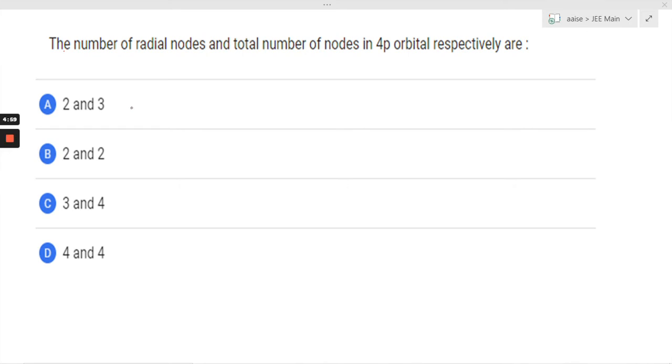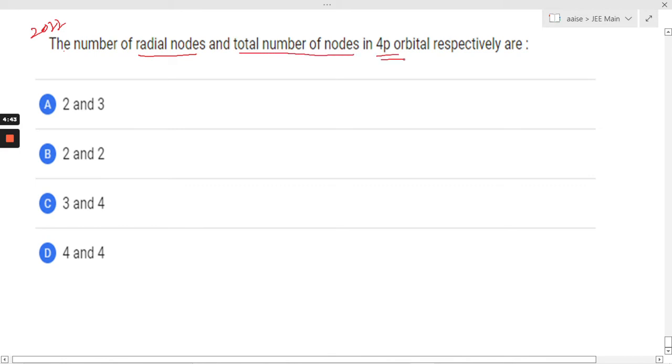Hello everyone, today we are solving a question from the 2022 paper. The question asks: the number of radial nodes and total number of nodes in 4p orbital. This is a very simple question.